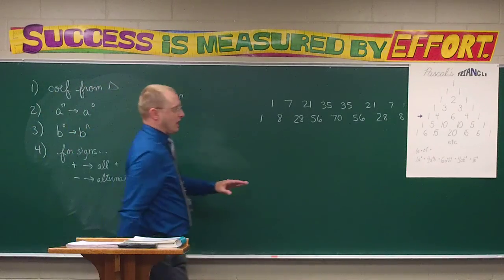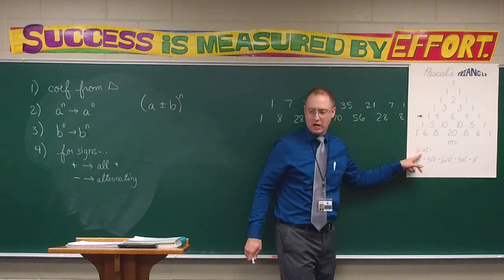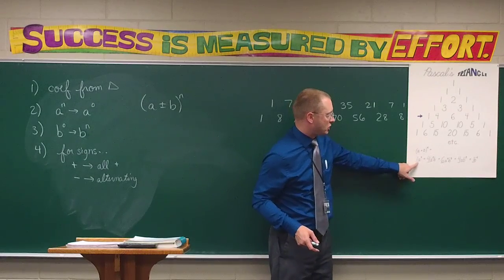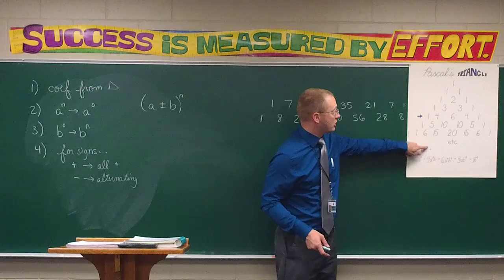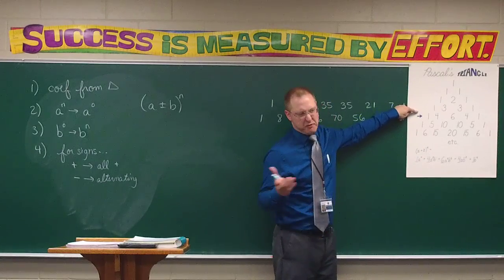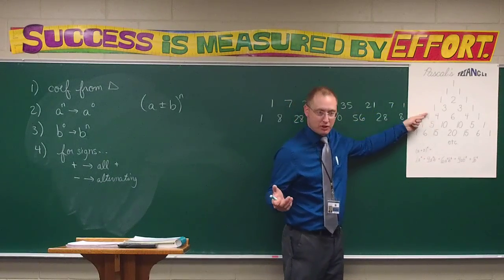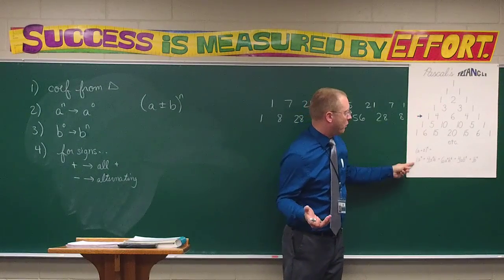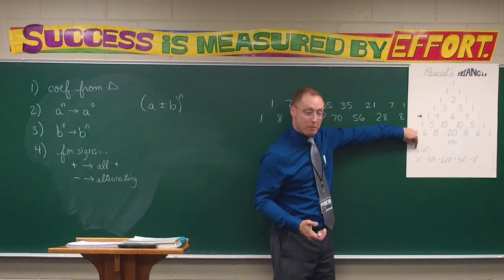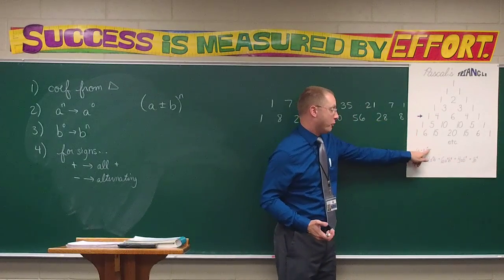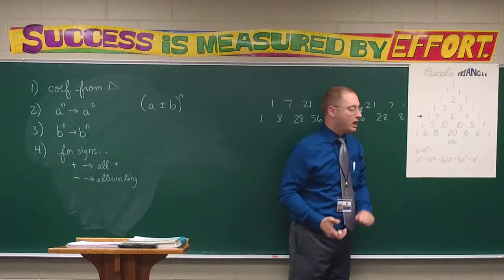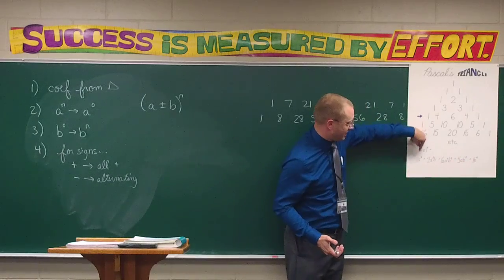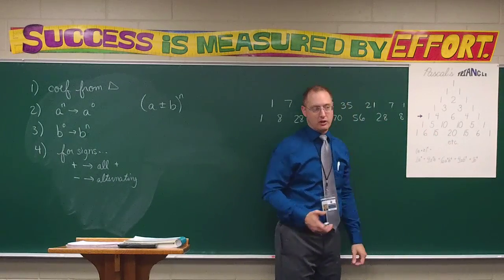Step four: remember two rules about signs. A positive binomial gives all positive signs. A negative binomial gives alternating signs. For example, a plus b to the fourth power: since it's the fourth power, we start with the row that has the four — not as the first number, which is always one, but as the second number. So the four row: 1, 4, 6, 4, 1. Then a to the fourth, cubed, squared, first, gone. Then b starts gone, then b to the first, squared, cubed, fourth. Since there's a positive, all signs are positive. And I didn't have to use my calculator to do anything.